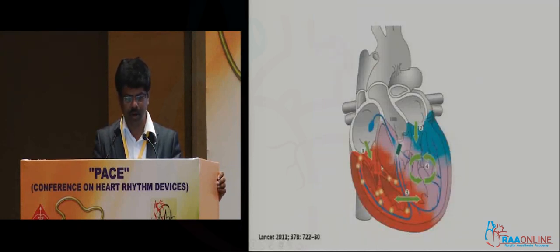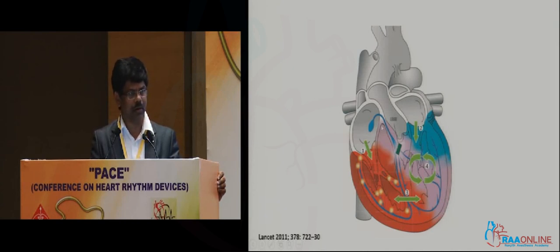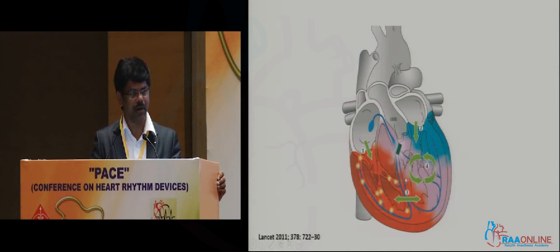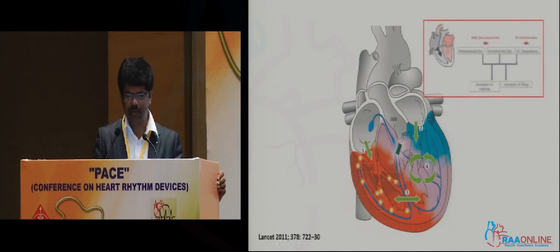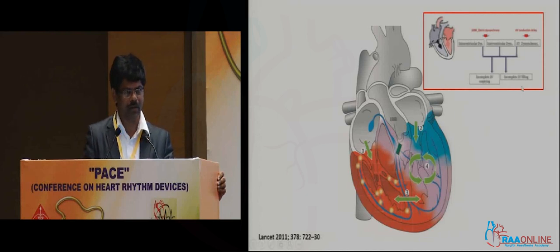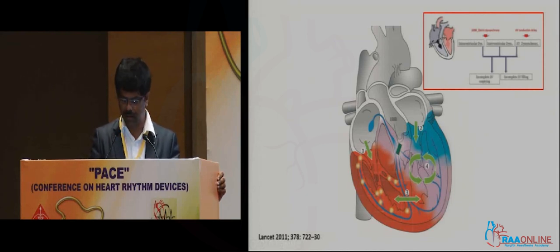What happens in bundle branch block — in left bundle branch block, there is a problem with atrioventricular conduction, atrioventricular dyssynchrony, interventricular dyssynchrony, and intraventricular dyssynchrony. This is due to abnormal activation of the ventricle wherein the bundle branch block makes the left ventricle get activated in a delayed manner, where the septum gets activated first and the lateral wall gets activated late, leading to incomplete ventricular emptying and incomplete LV filling, worsening heart failure and mortality.